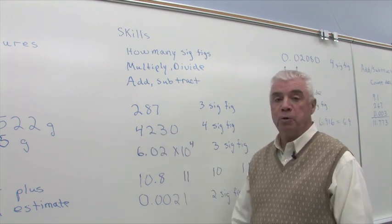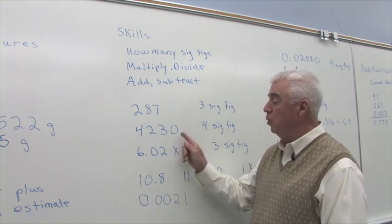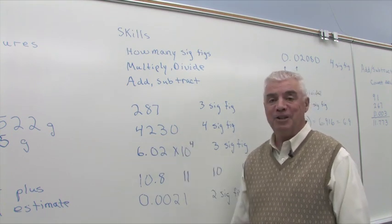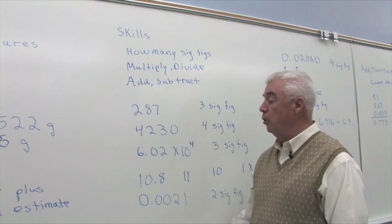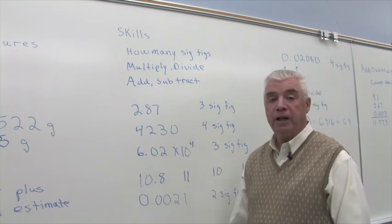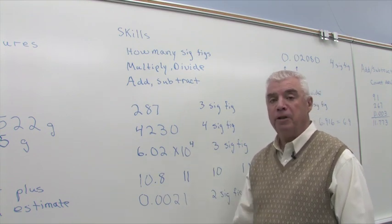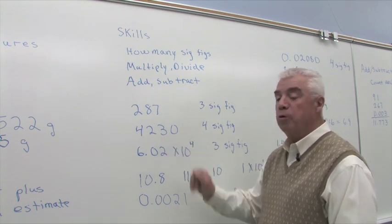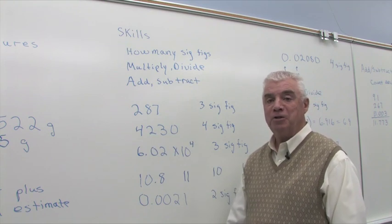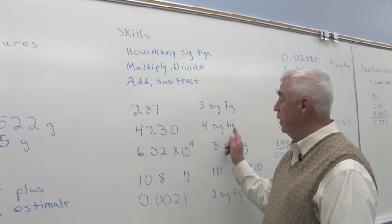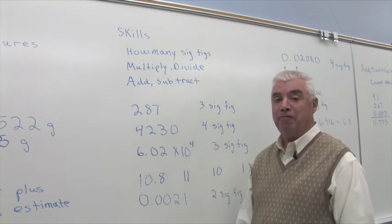Given this number, 4230, for example, we call this a trailing zero. And trailing zeros are treated as significant in our text. There are texts that differ in this rule, but we'll follow the rule that trailing zeros are significant. And so we have four significant figures.